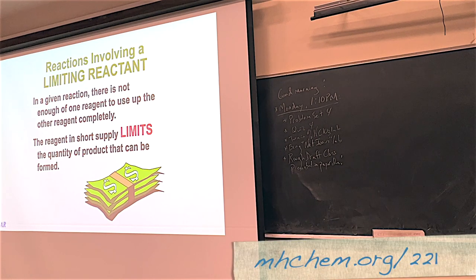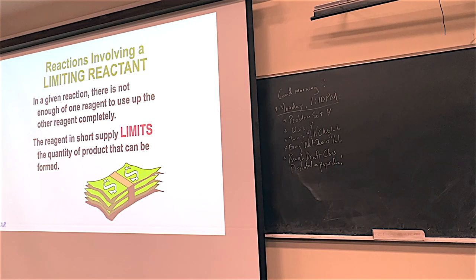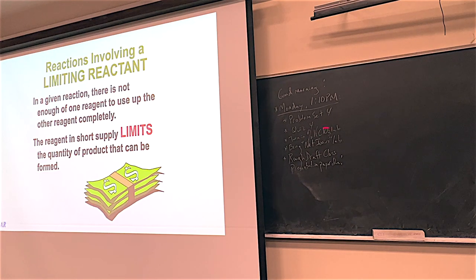We'll talk about limiting reactants and stuff like that. You just took the midterm on Monday, and next Monday in lab we'll go over Problem Set 4, which has grams, moles, limiting reactants, and things like that. Quiz number 4 will have information from Chapter 4, Part 1. You'll turn in the percent potassium chloride lab and bring your net ionics lab.